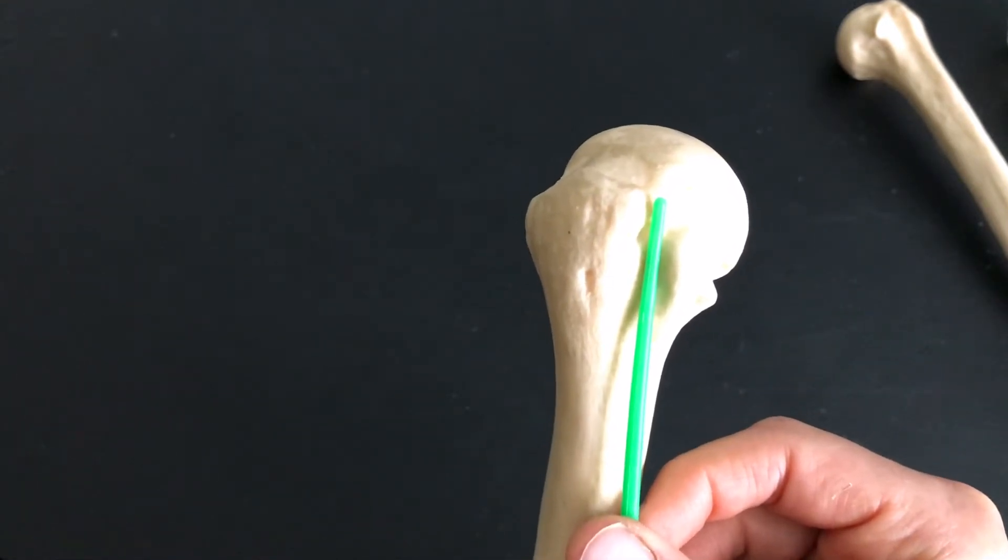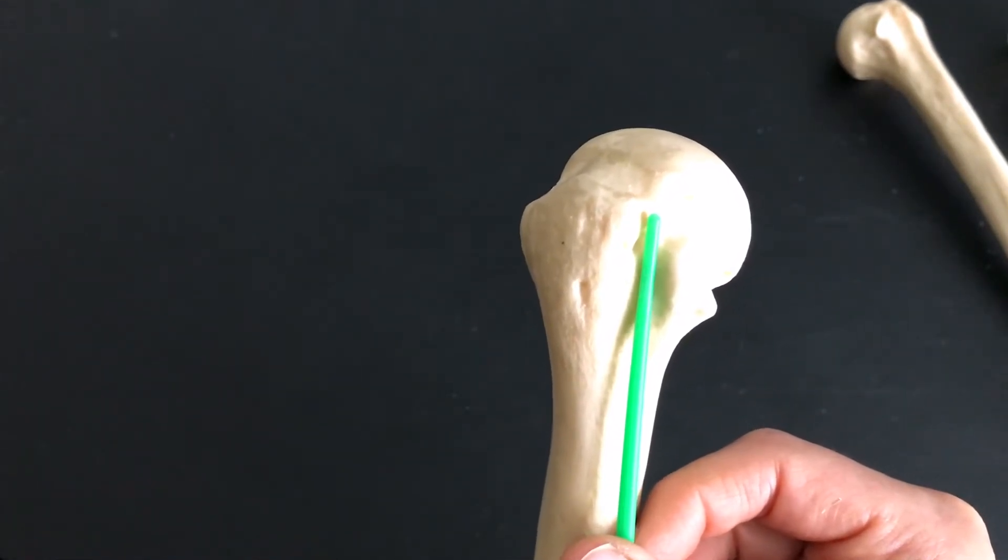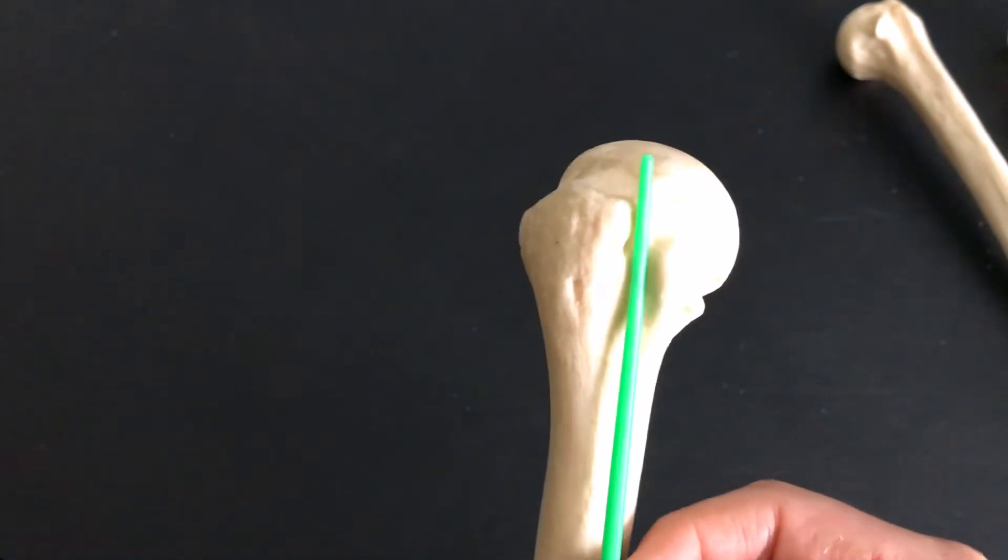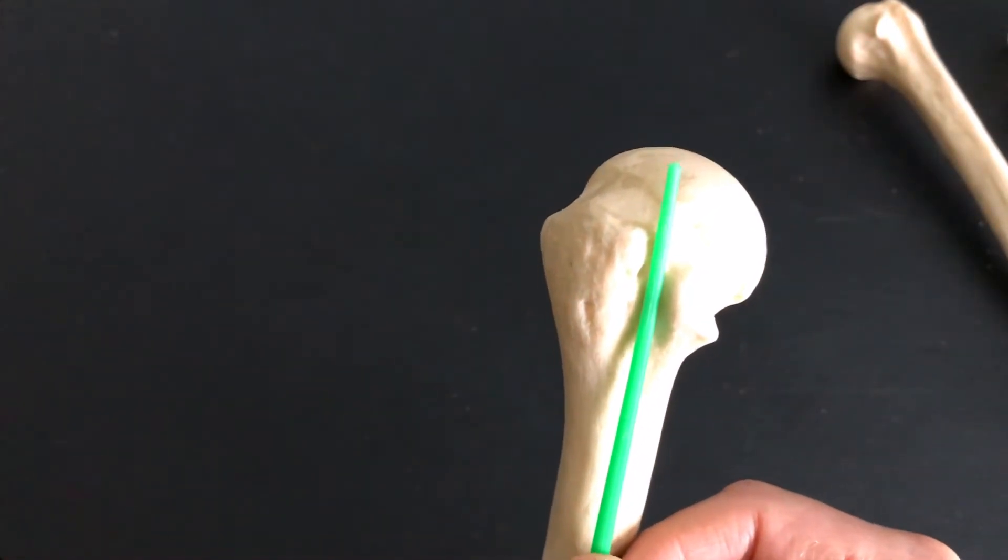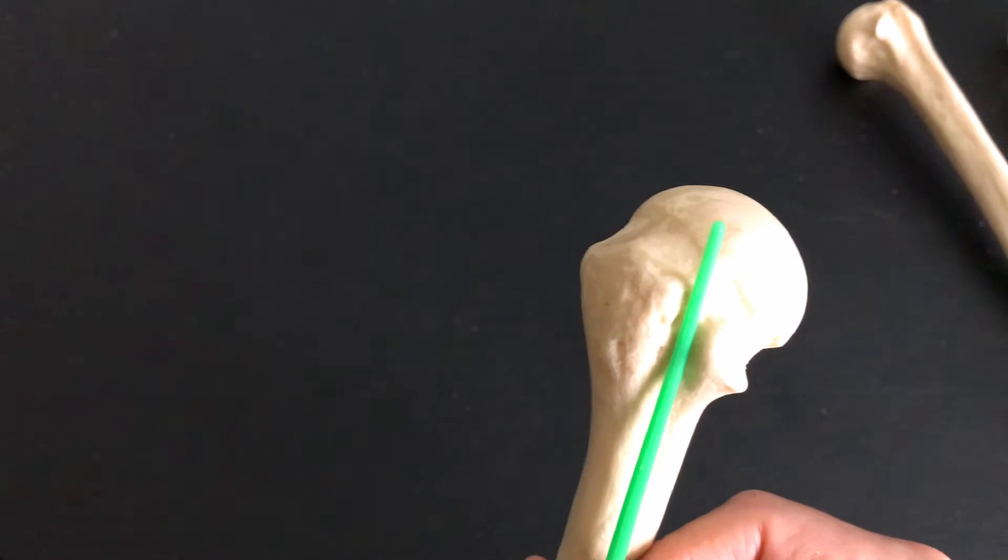The intertubercular groove is also called the bicipital groove. When you hear the bicipital groove, you might think of the biceps brachii muscle. That's the muscle on the anterior side of your arm. When someone asks you to flex your muscles, put your arms up and you show them what you got, that's this right here.